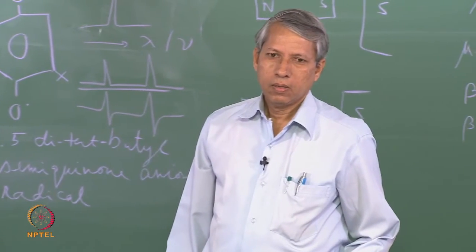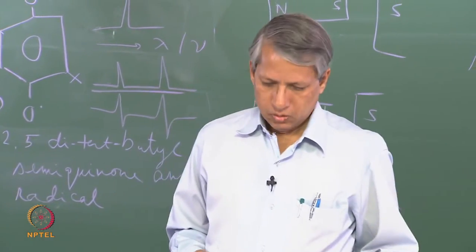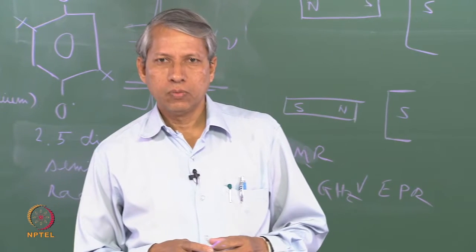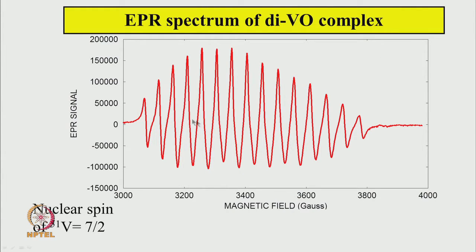Another complex is a vanadyl complex with two vanadyl nuclei. The vanadyl nucleus has a nuclear spin of 7/2. In this spectrum you can see 15 lines. The intensities vary in an unusual pattern — starting low on the left, increasing, then decreasing again — and the linewidths are narrower in the middle and broader toward the edges.